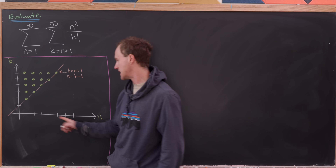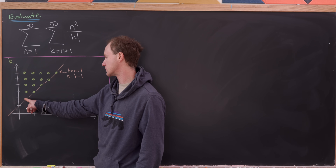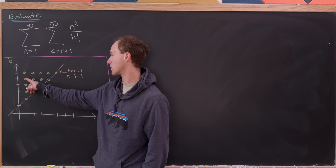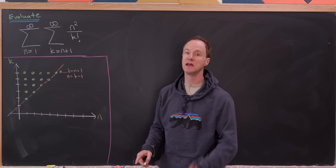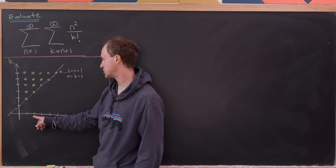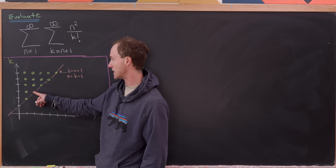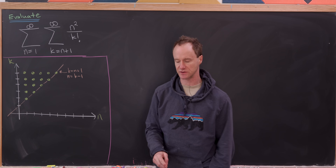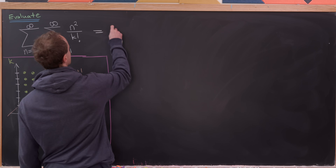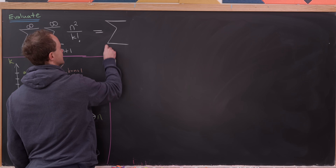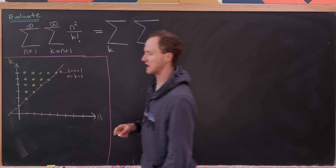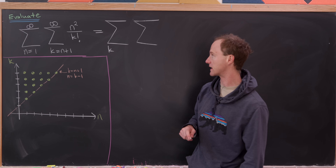So when n is equal to 1, k is equal to 2, but k could also be 3, 4, 5, 6, and so forth going infinitely large. When n is equal to 2, k starts at 3 and then goes 4, 5, 6, and so on. We want to change the order of summation so that the outermost sum is now a k sum and the inner sum is an n sum.